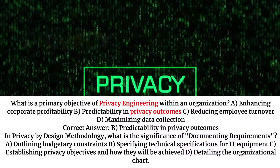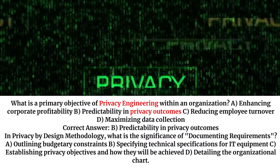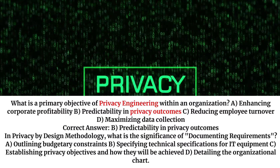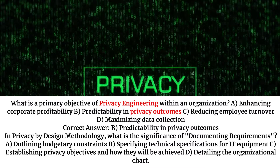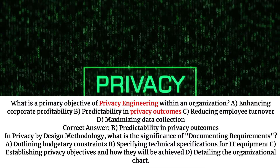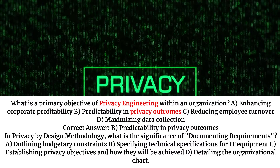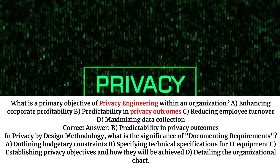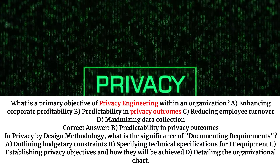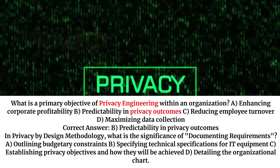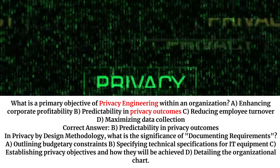What is a primary objective of privacy engineering within an organization? A. Enhancing corporate profitability. B. Predictability and privacy outcomes. C. Reducing employee turnover. D. Maximizing data collection. Correct answer: B. Predictability and privacy outcomes in privacy by design methodology.